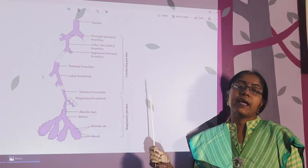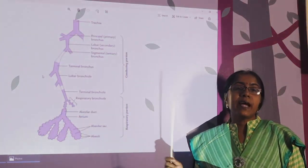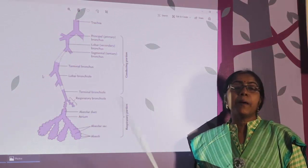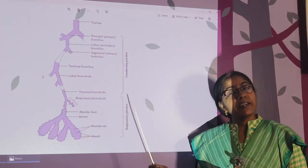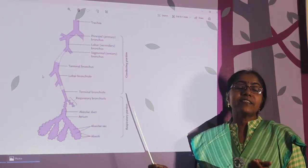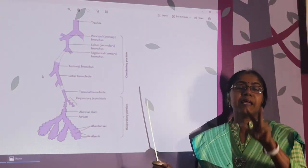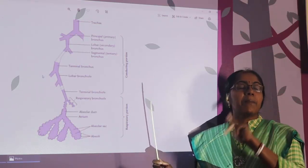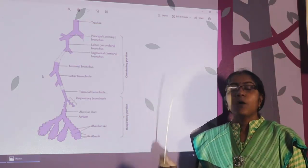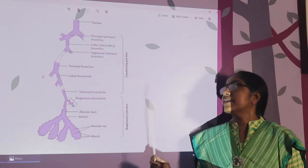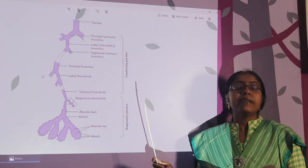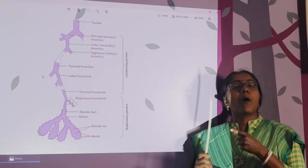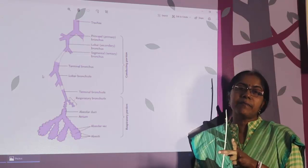Pulmonary arteries arise from the pulmonary trunk, which arises from the right ventricle, giving rise to the right and left pulmonary arteries. For venous drainage, venous blood is drained by two sets of veins: bronchial veins and pulmonary veins.